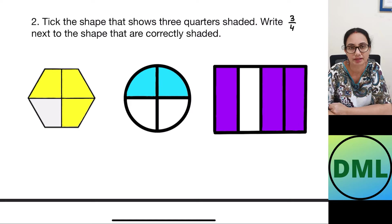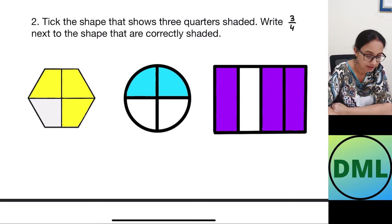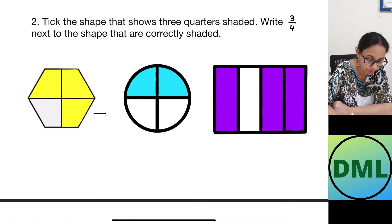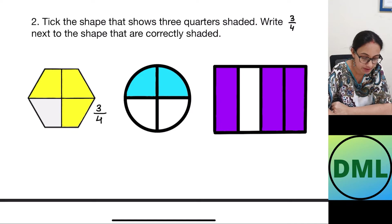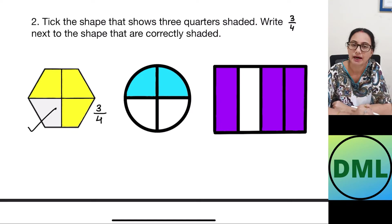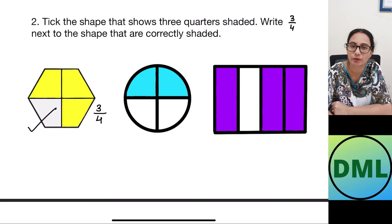So this shape has been divided into four equal parts. How many parts are shaded? One, two, and three parts are shaded. That means there are four parts and out of those, three parts are shaded — this shape is three by four, which is my answer.